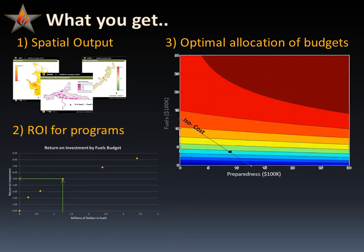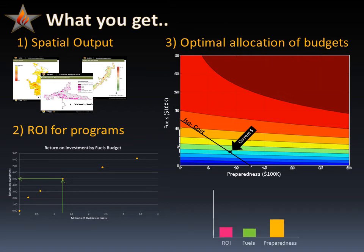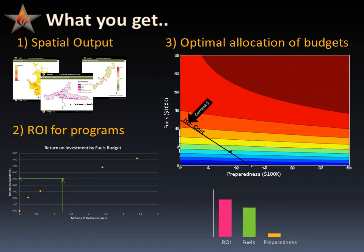In this example, we look at how the fuels program interacts with the preparedness program. In this colorful graph, the black arrow indicates the funding allocation of a unit's preparedness budget on the x-axis and the fuel's budget on the y-axis. The color contour lines show increasing return on investment moving up to the right. The black line represents a fixed or constant budget — you travel up or down this line for different mixes of fuels or preparedness budgets while maintaining the same overall budget. This demonstrates how reallocating the funding between the programs can improve the return on investment.